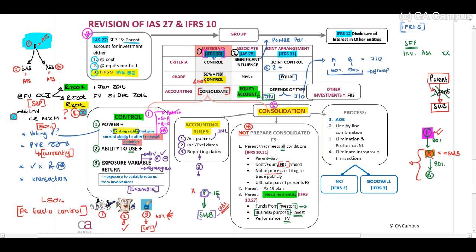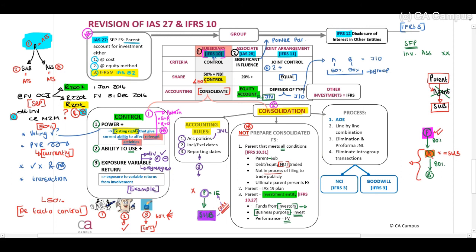Let me quickly recap. If we have a parent that is an investment entity that owns shares in a subsidiary that owns shares in a subsidiary, we do not have to consolidate. But if that subsidiary provides services to the investment entity similar to the activities of an investment entity, we have to consolidate. This sort of makes sense — if we have a holding company registering quite a lot of smaller subsidiaries and the purpose of these subsidiaries is to provide services to the holding company, it's sort of one business, therefore we need to consolidate.